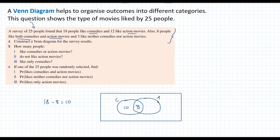Now, same thing with action movies. All the numbers inside this circle represent people that like action movies. So we know 12 people like action movies. But out of those, there are eight that also like comedy. So we're left with four people that like only action movies.